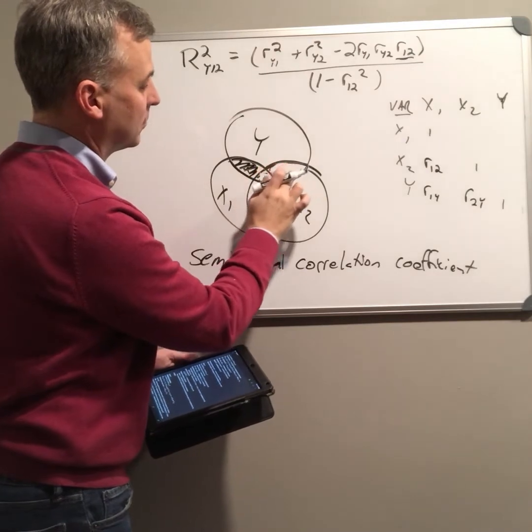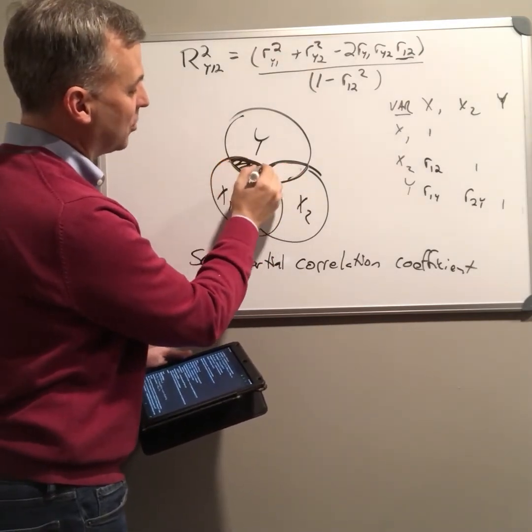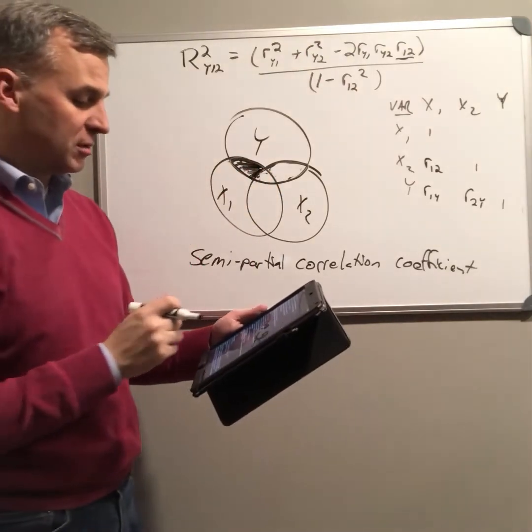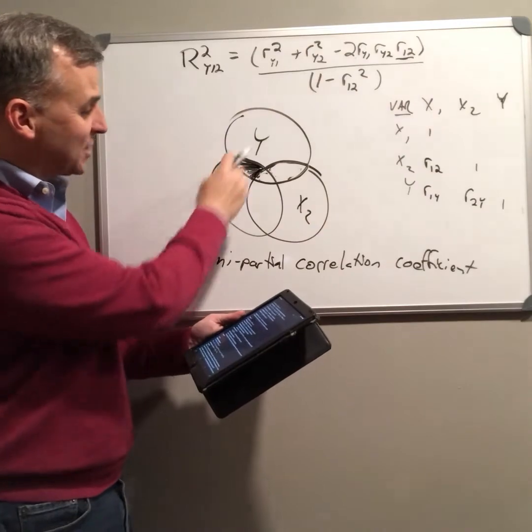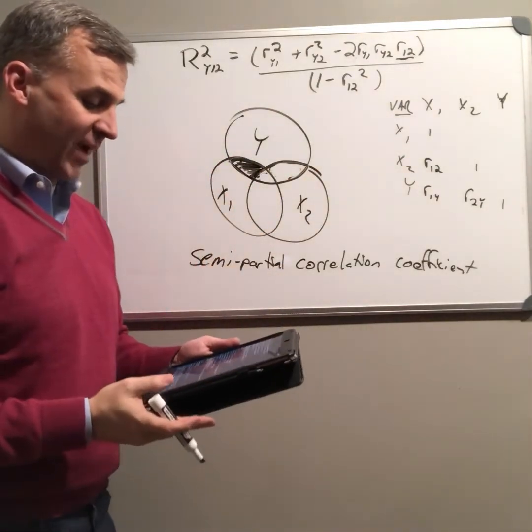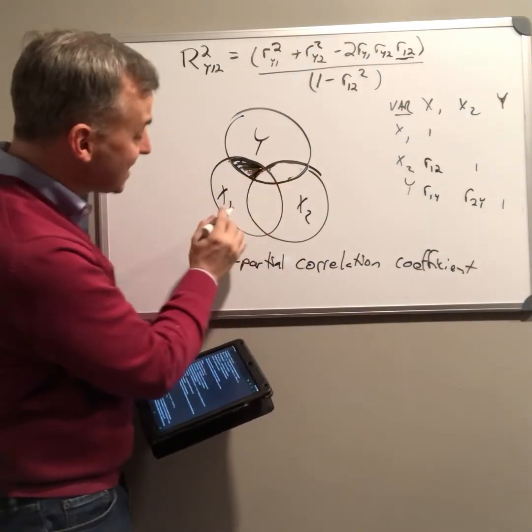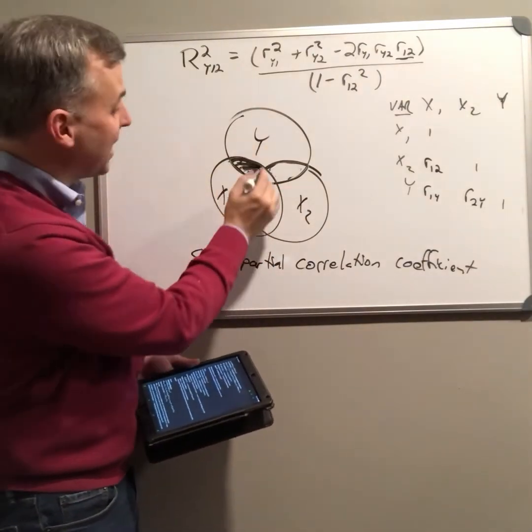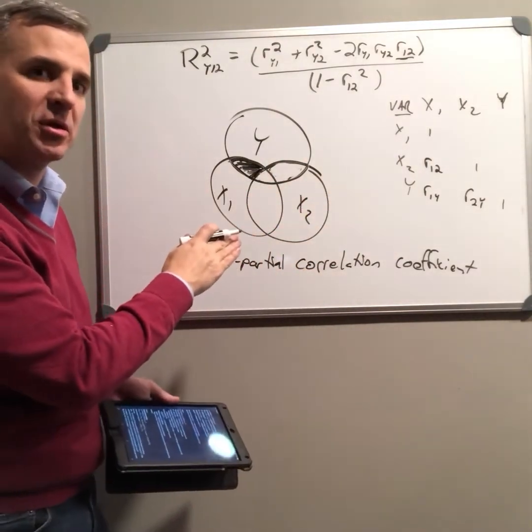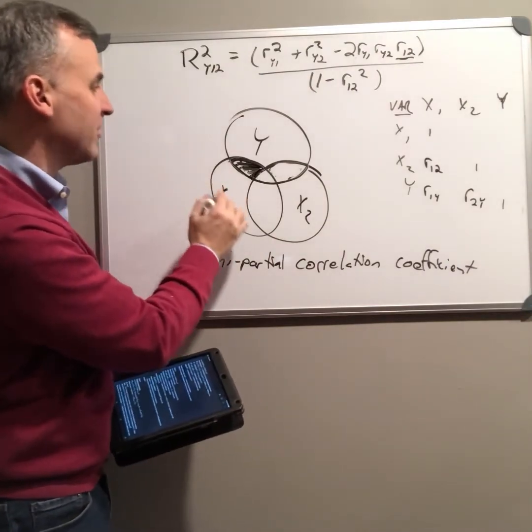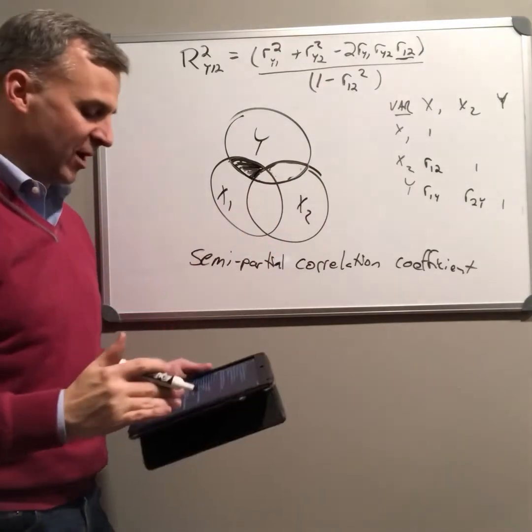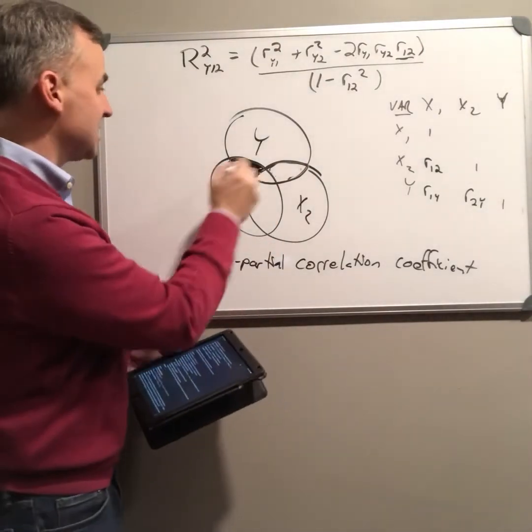Semi-partial correlation coefficient graphically represents this contribution right here. What is the contribution for x1 when I partial out all of the contribution for x2, including this little piece that x1 does explain this piece of y, but because so does x2, we ignore it for the semi-partial correlation coefficient. This is the contribution of x1 to y over and above the contribution of any other variable.